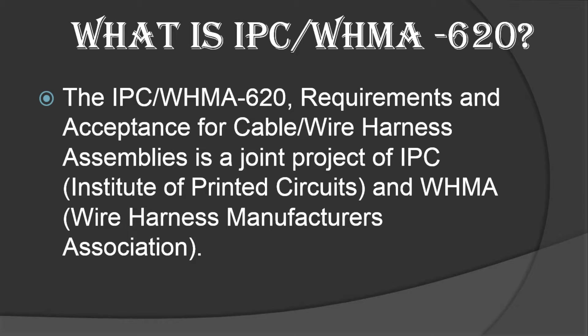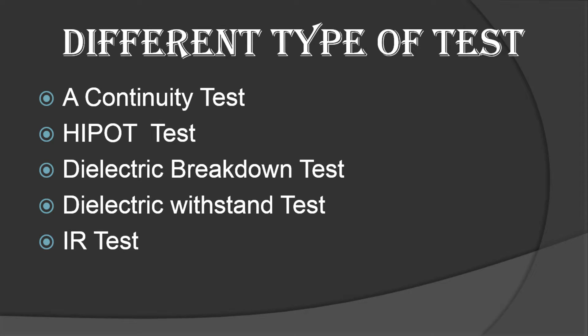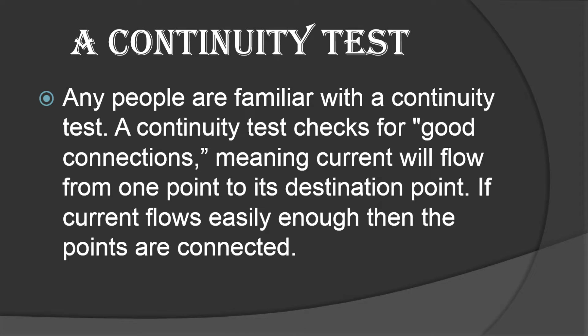Next, what are the different types of tests you have to perform for a cable? To know the performance of cables you have to do the continuity test, HiPot test, dielectric breakdown test, dielectric withstand test, and IR test. Most people are familiar with the continuity test — it is used to verify a good connection where current flows from one end to another end.